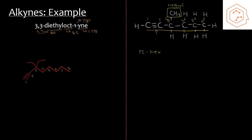With that information we can name the structure. First, include the substituent group: '3-methyl'. Then the parent chain prefix 'hex', the position of the triple bond '1', and the suffix '-yne' for a triple bond in a chain — giving us 3-methylhex-1-yne. The second way to write this switches the position number before the parent chain prefix: 3-methyl-1-hexyne.